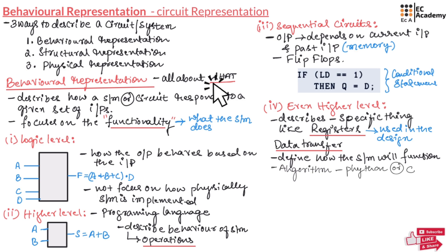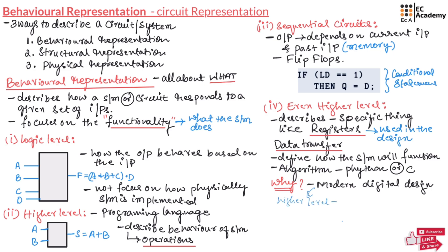So why does behavioral representation matter? Behavioral representation is very important in modern digital design. It is used to convert a higher level behavior specification into an optimized hardware design. This process ensures faster design time, increased accuracy, and high reliability. By using behavioral representation, designers can develop complex digital systems while focusing only on functionality before moving to implementation details. This is about behavioral representation in digital design.